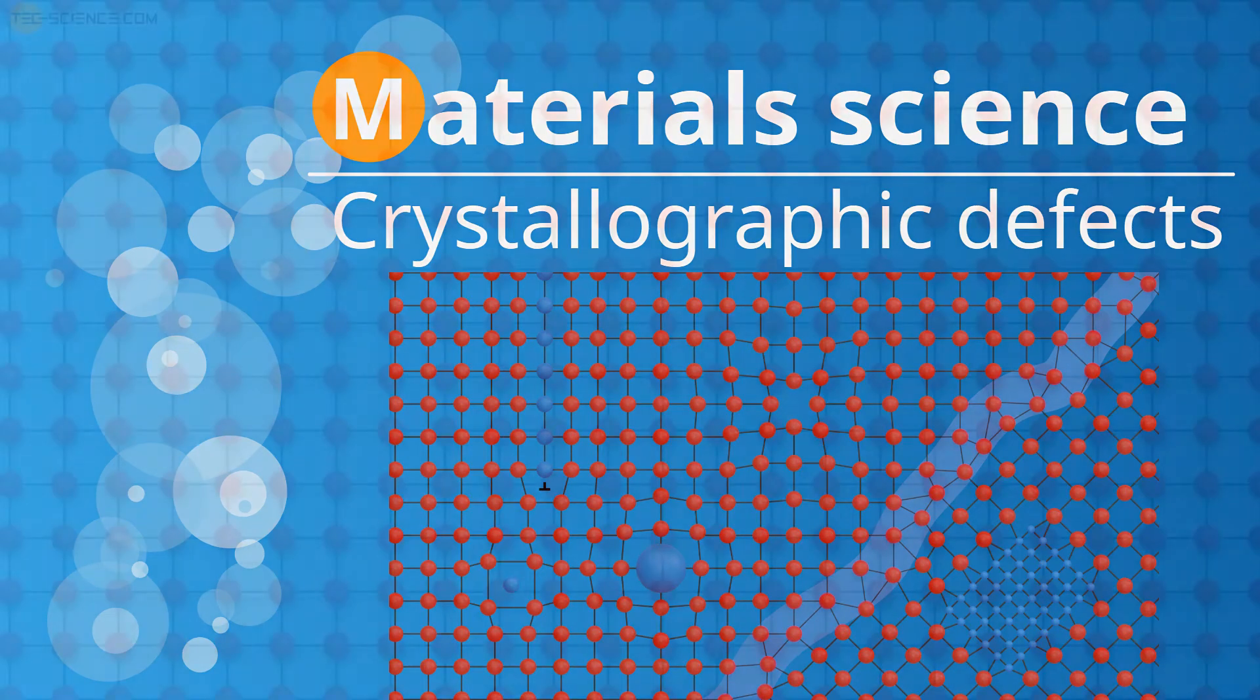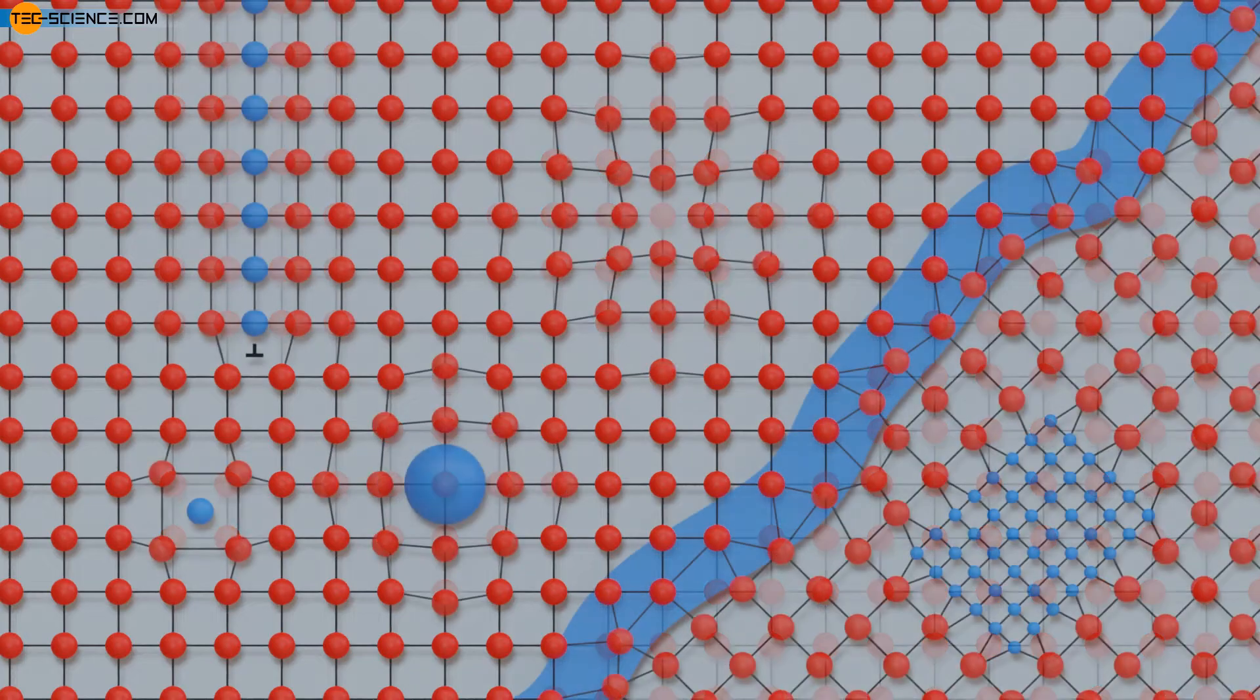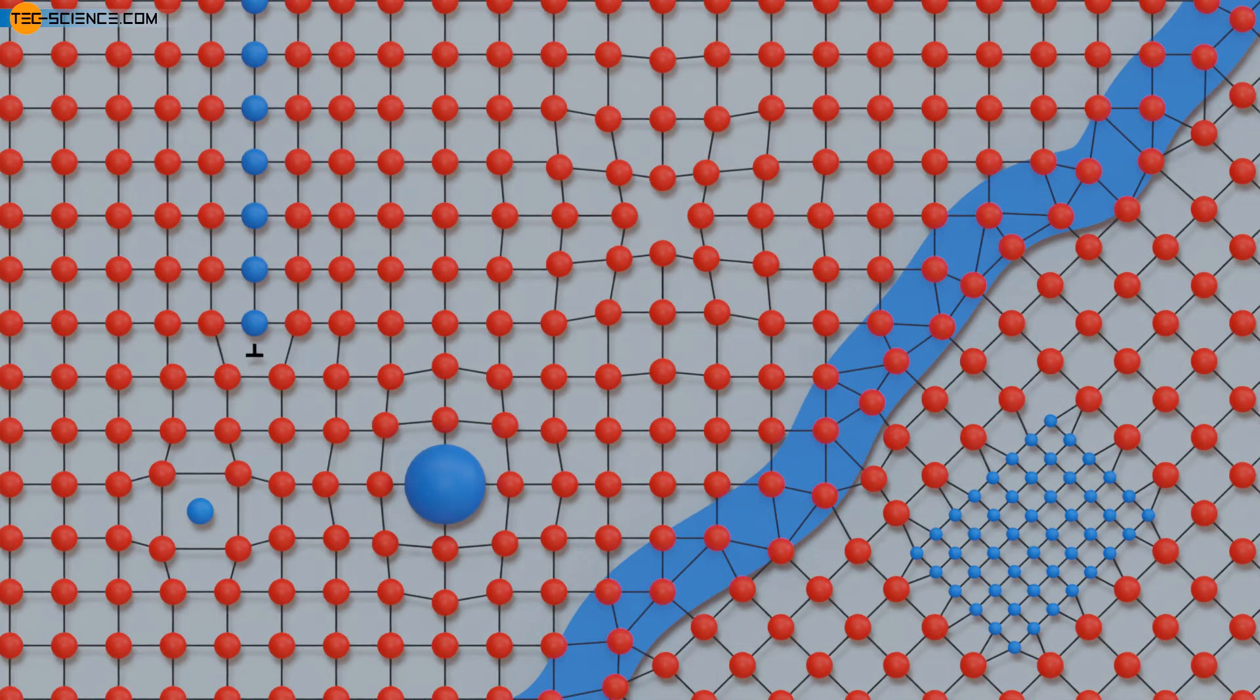Crystallographic Defects. In the linked video, we took a closer look at the structure of metals with their typical lattice structures. We always assumed a defect-free lattice. However, such ideal crystals do not exist in practice, or they can only be achieved approximated on a very small scale and with great effort. The metals used in mechanical engineering do not have a perfect lattice structure, but show so-called lattice defects. These are also called crystallographic defects.